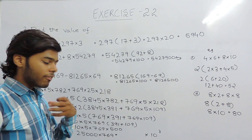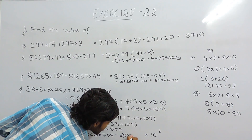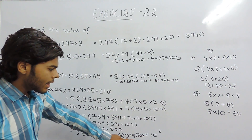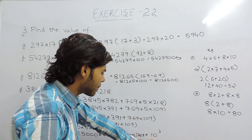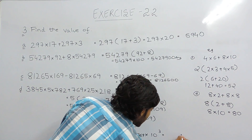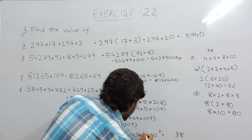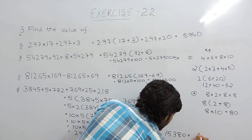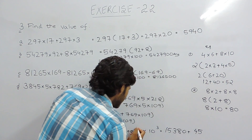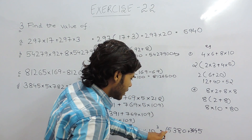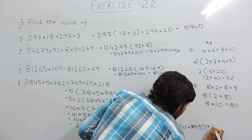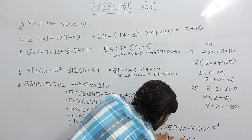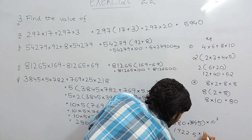To calculate 769×25, we can write 25 as 20 + 5, so 769×20 plus 769×5. First, 769×20: 9×2=18 carry 1, 6×2=12+1=13 carry 1, 7×2=14+1=15, giving 15380. Then 769×5: 9×5=45 carry 4, 6×5=30+4=34 carry 3, 7×5=35+3=38, giving 3845. Adding 15380 + 3845 = 19225. Multiplied by 10³ gives the required answer of 19225000.